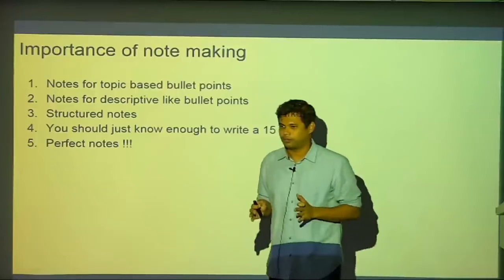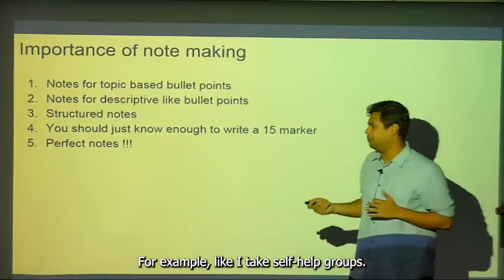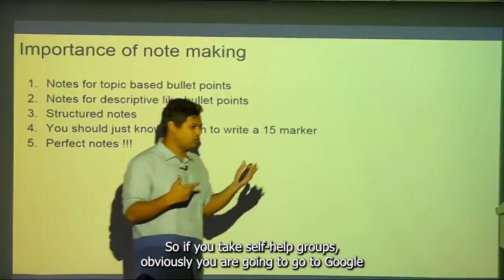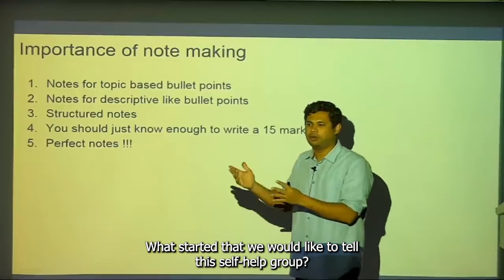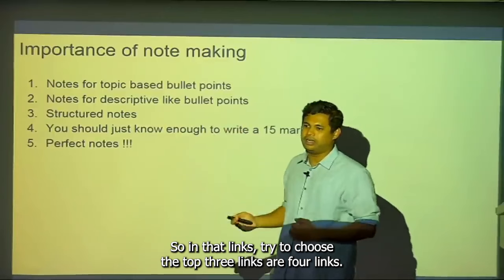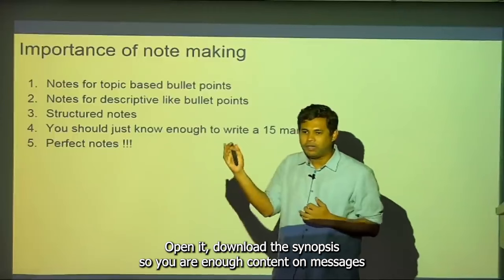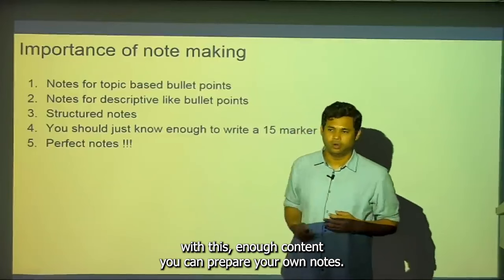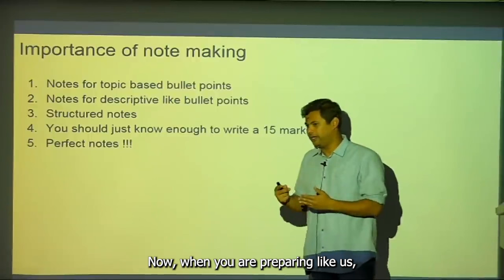For topic-based bullet points, let's take self-help groups as an example. You go to Google and type 'self-help groups Insights Secure'. You will get many links — choose the top three or four, open them, and download the synopsis. That gives you enough content on self-help groups to prepare your own notes.